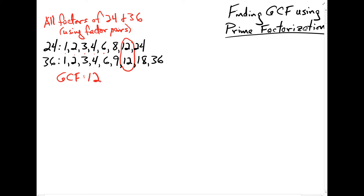There's another method that is often used to find the greatest common factor, which turns out to be often more useful, especially when you have larger numbers and it becomes a little more unwieldy to find the common factor using factor pairs. So let's take a look at that.